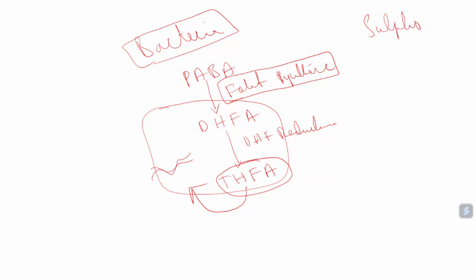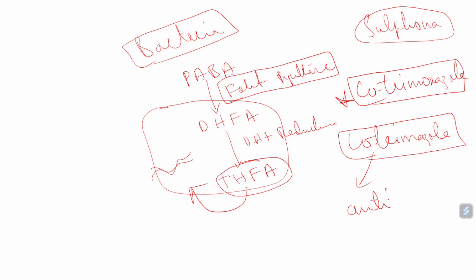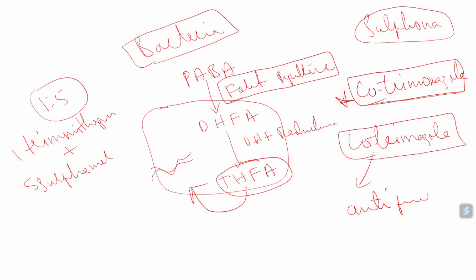Sulfonamides include sulfasalazine, sulfamethoxazole, sulfadoxine, and many others. A very famous combination is cotrimoxazole, which is trimethoprim plus sulfamethoxazole in a 1:5 ratio. Sulfonamides will inhibit the folate synthase enzyme, while trimethoprim inhibits the dihydrofolate reductase enzyme. Together they block both steps of folic acid synthesis in bacteria.